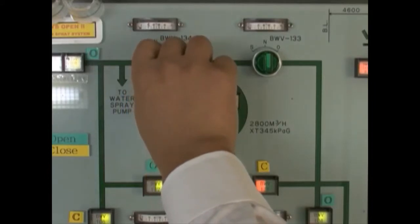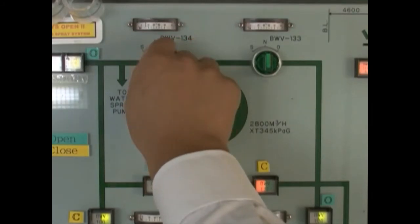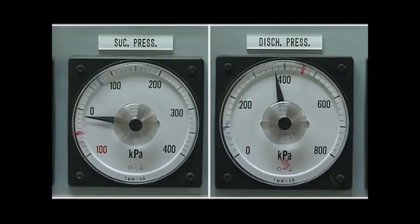As a corrective measure, reduce the pump's discharge valve. Then the gauge resumes stability.